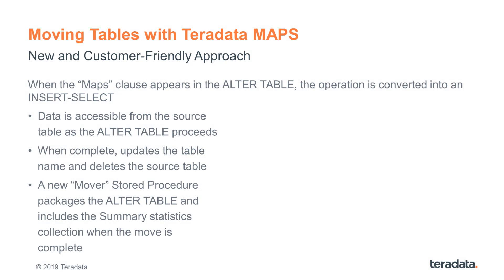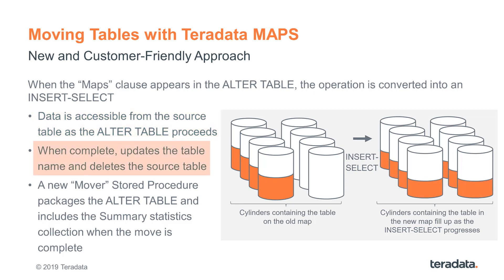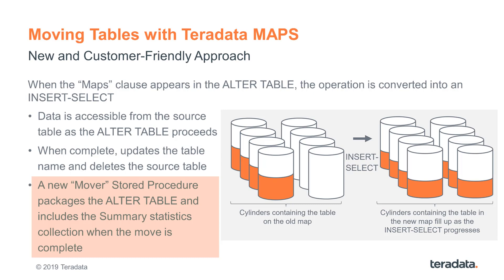This is done by means of a new version of the alter table. Under the covers, this alter table is actually an insert select, which is great for moving tables in this context because you can read the data in the source table while the target table is being loaded, so the availability of your data increases. When it's complete, the alter table will drop the source table and update the dictionary to reflect that the table is now on TD map two. There is also a mover stored procedure that we recommend you use, because it simplifies privilege requirements and collects summary statistics for you when the move is complete, so your statistics will be up to date.